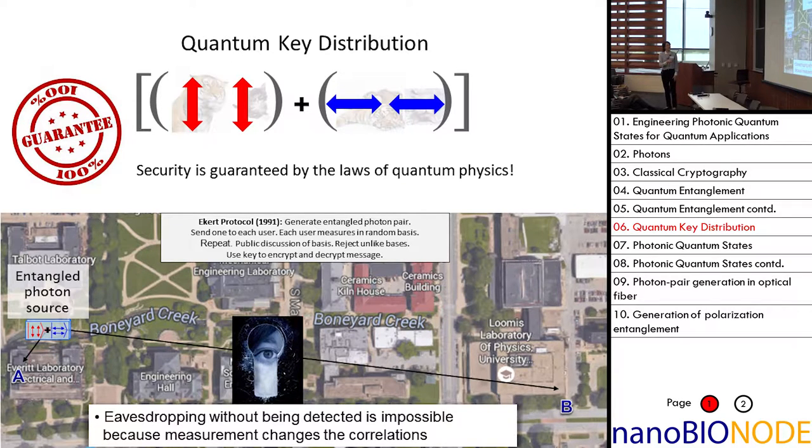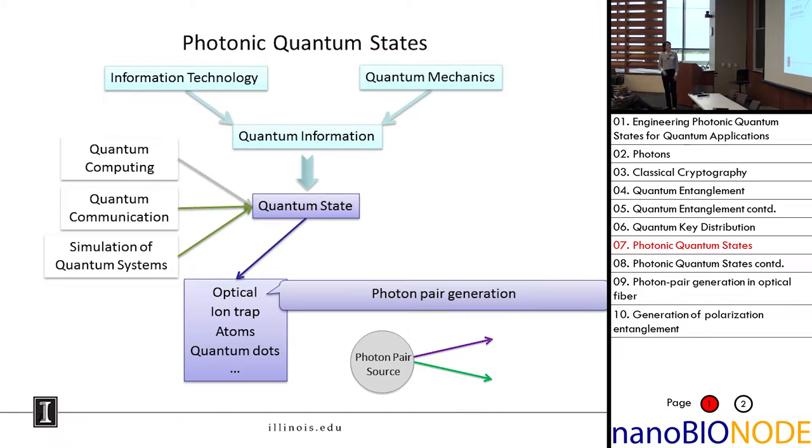That's quantum key distribution. Of course, that's just one of many examples of applications of quantum states of photons. This is the general field of quantum information that brings together information technology and quantum mechanics. It's based on the use of quantum states - you can do things like computing, communication, and simulation. It's not just photons that can do this. You could use ions, atoms, quantum dots, and as we saw in the previous talk, condensed matter systems. In my talk, I'm going to focus on the optical.